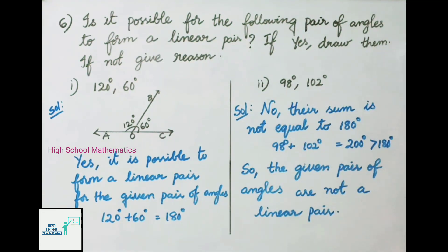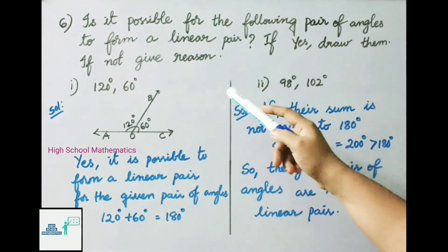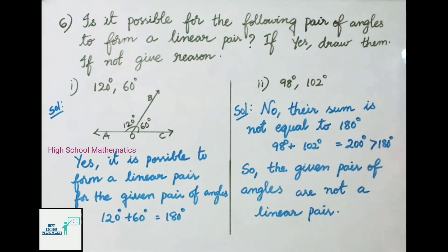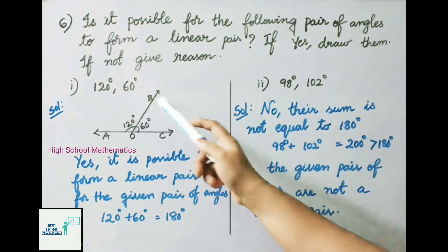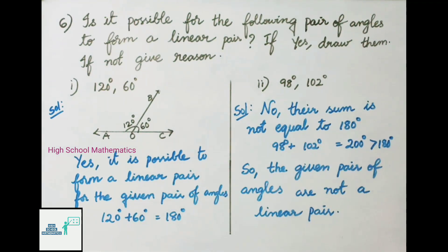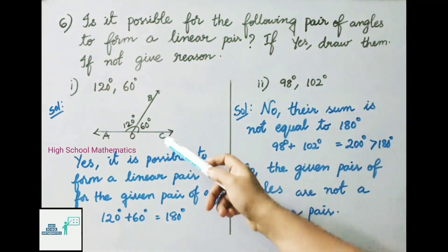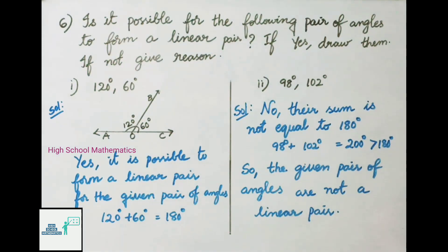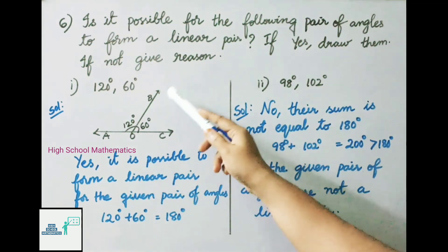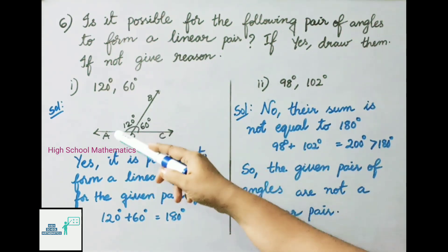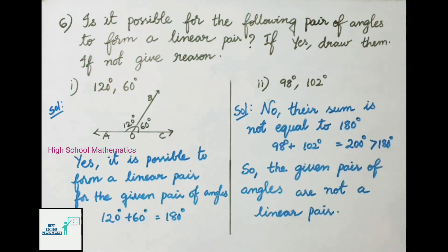Question number six: is it possible for the following pair of angles to form a linear pair? First: 120 degrees and 60 degrees. Yes, it is possible — 120 plus 60 equals 180 degrees, so they form a linear pair. Angle AOB and angle BOC equals 120 plus 60 degrees, which is 180 degrees.